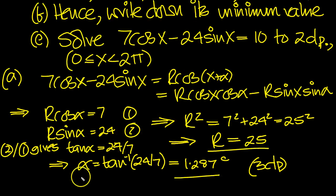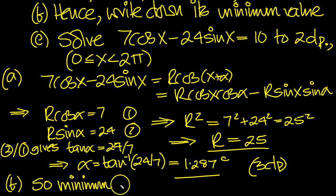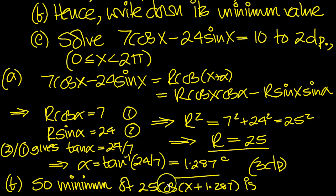Part B now, hence write down its minimum value. The minimum of 25cos(x + 1.287) is - now the cosine function simply varies from 1 to minus 1, it oscillates. So when you scale it up by a factor of 25, it's just going to oscillate between 25 and minus 25. So the minimum value will of course be minus 25.